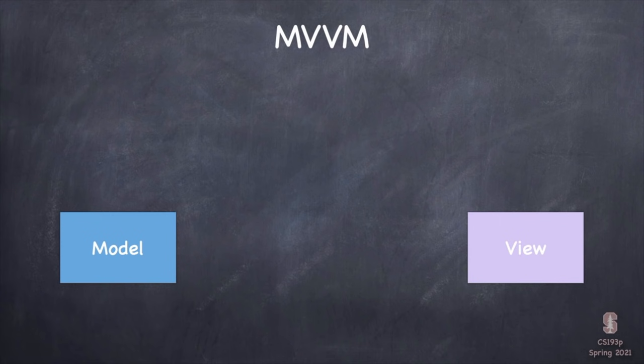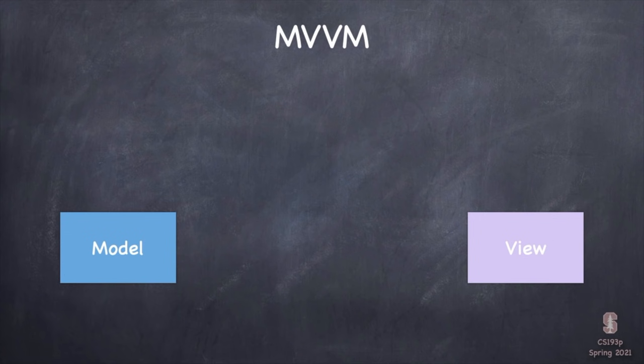MVVM does share some things with MVC. Most importantly, it separates the user interface code — what we call the view, the purple rectangle on the right — from the backend or logic of our application, which we call the model, the blue rectangle. The purple rectangle, capital T, capital V, the View, is made up of those view things. So let's talk more about these two things, model and view, and the mechanisms in MVVM that hook them up to each other.